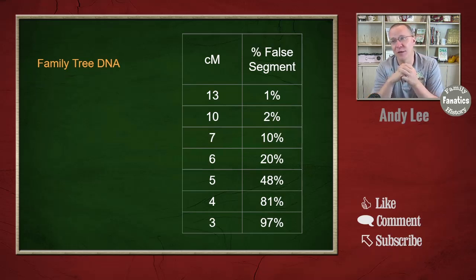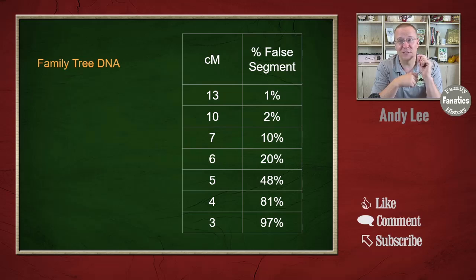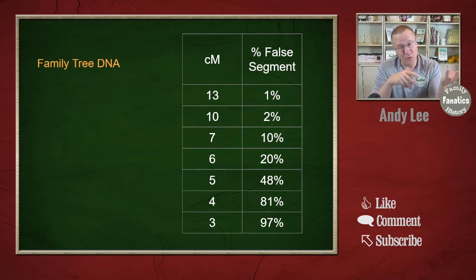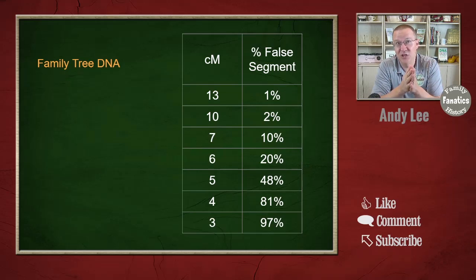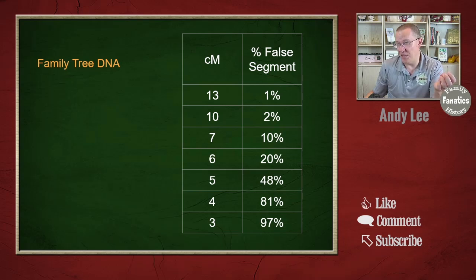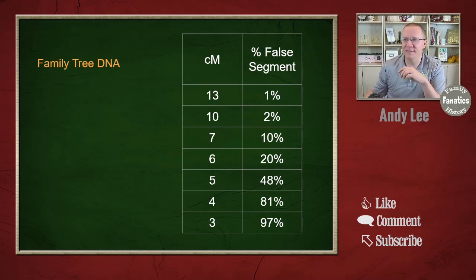Family Tree DNA recently came out with a white paper explaining their methodology, with a similar table and somewhat similar results. At 13 centimorgans they find about one percent are false segments, comparable to John Walden and Tim Jansen. That goes up to about two percent at 10, and at seven it's only 10 percent as opposed to 33 percent. But at three centimorgans, 97 percent — almost all of the segments — are false. Only one out of 33 segments will be a true segment.